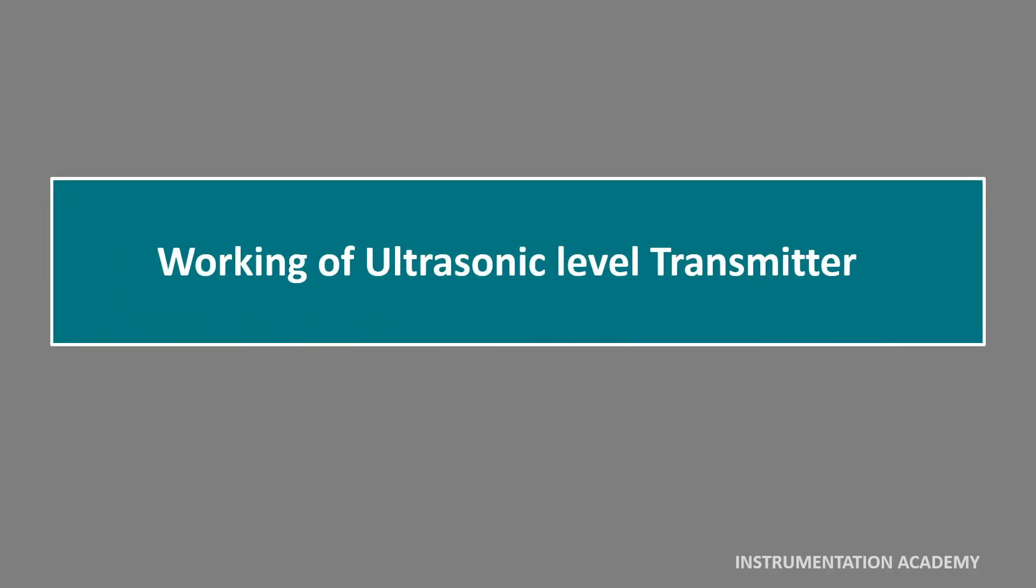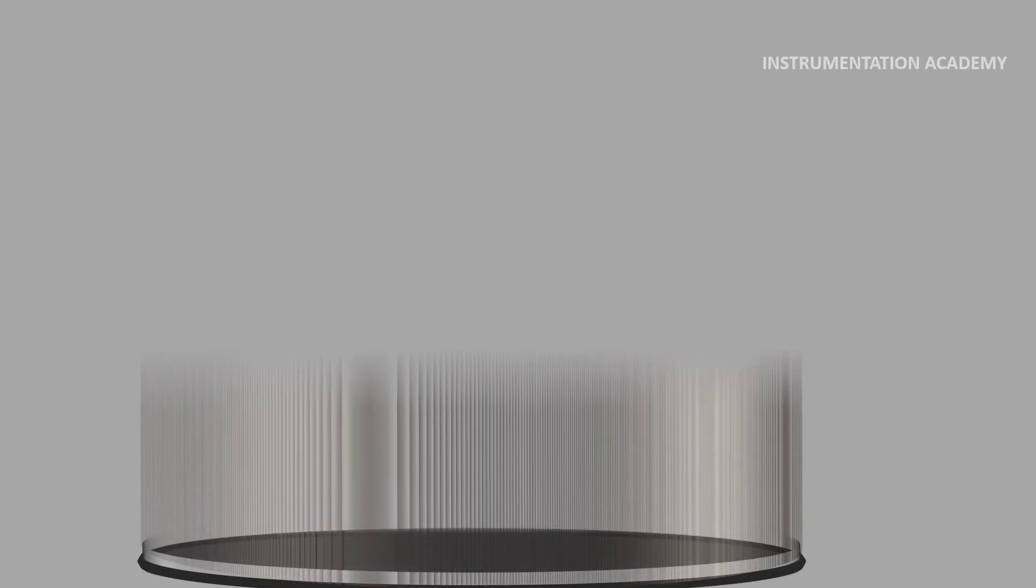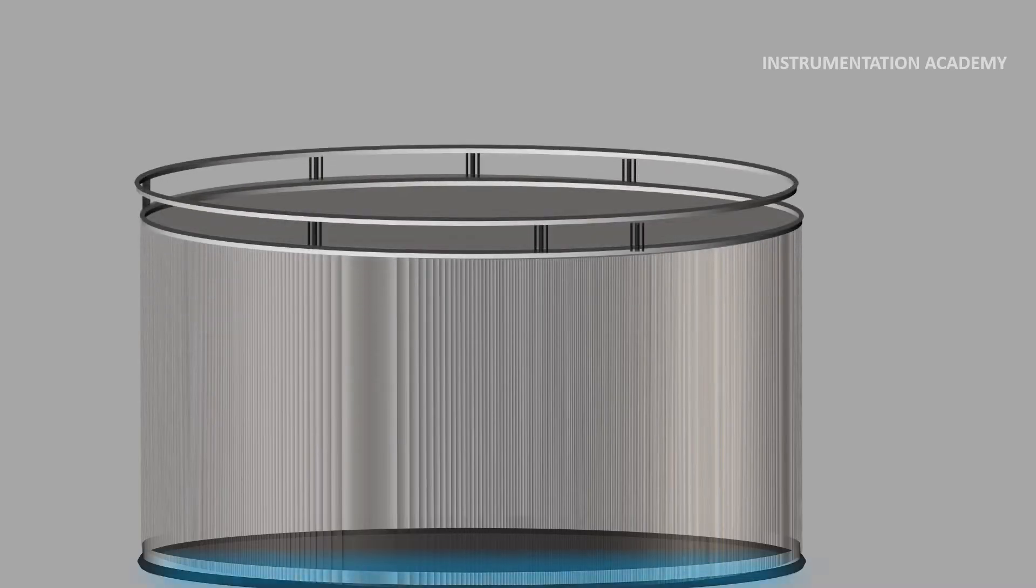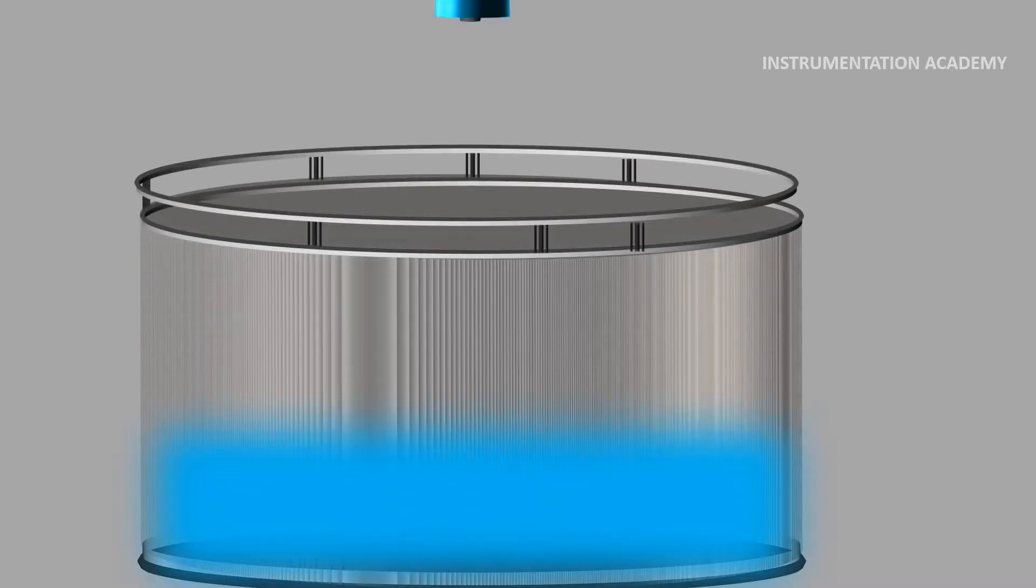Now let's move on to the working of ultrasonic level transmitter. Consider that we need to measure a continuous level of liquid in a tank. For this, we install an ultrasonic level transmitter on the top of the tank.